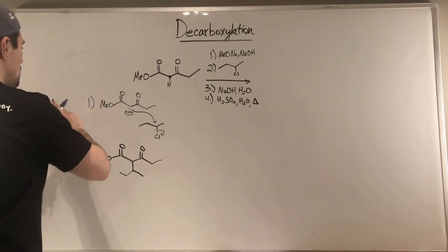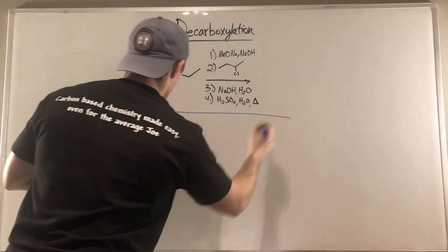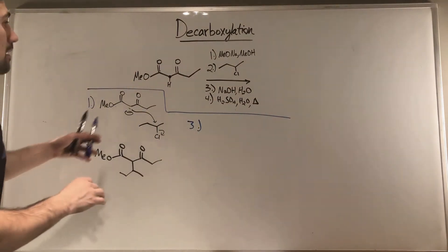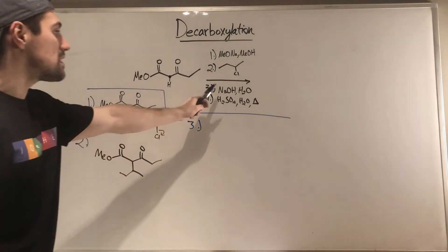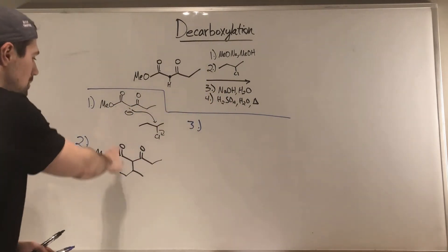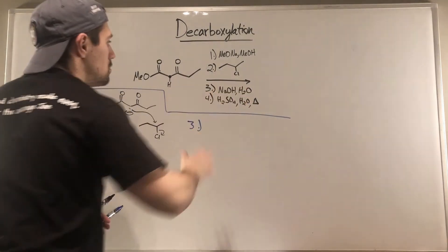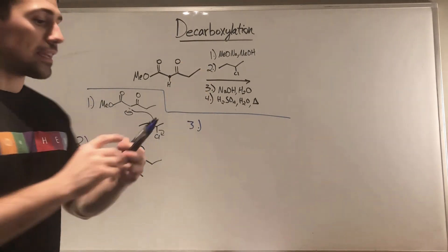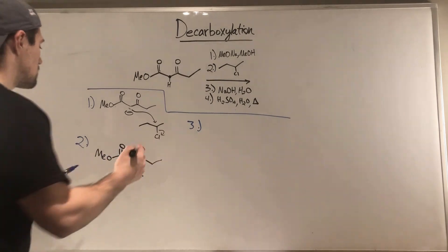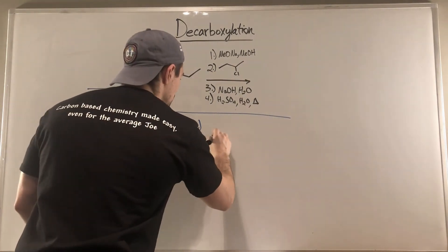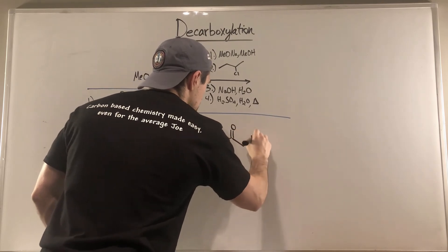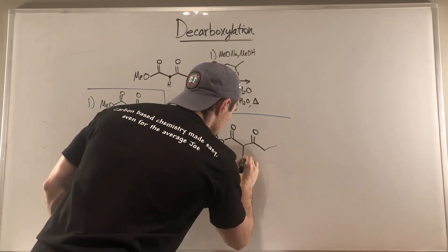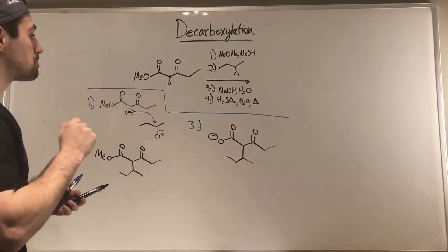Now we get to the part where we see hydrolysis conditions for our ester. We see we have an ester right here. All this is going to do is attack, go through the tetrahedral intermediate, collapse, and get to our part where we do have a carboxylate. So basically what that's going to look like is we're going to lose our ester character. That's all that's going to happen.